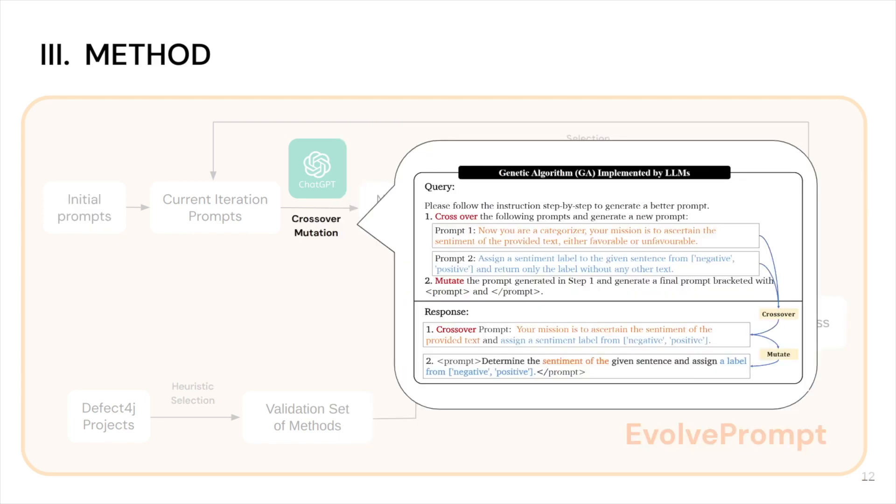For crossover and mutation, we adopt similar methods to the EvoPrompt paper. Our new candidate prompt is generated through a two-step process based on selected two parents. Firstly, the parent's prompts undergo crossover, resulting in a new prompt that selectively combines components from both parents. Next, the newly generated prompt from the first step undergoes mutation in which random alterations are made to some of its content.